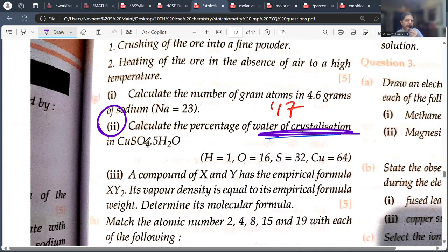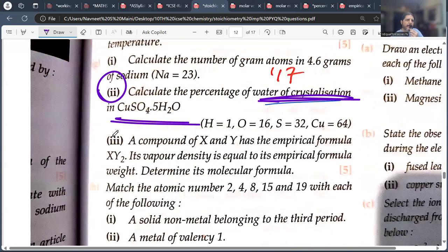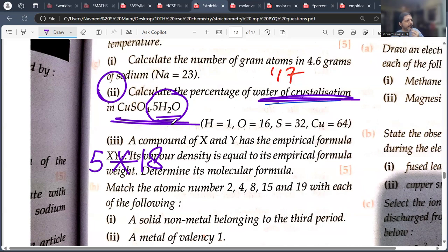Calculate the percentage of water of crystallization in CuSO4 5H2O. Now, just look at this. Let me tell you a little bit. This 5H2O. The molar mass is 5 into 18. Because the water is 18.